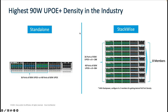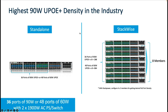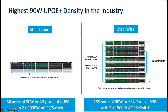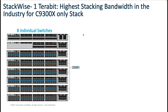One of the key drivers of the next generation access design is the smart and sustainable building. A key requirement is providing higher UPoE+ density. The Catalyst 9300X provides the highest 90-watt UPoE+ density in the industry. A standalone 9300X is capable of providing 36 ports of 90-watt UPoE+ or 48 ports of 60-watt UPoE.